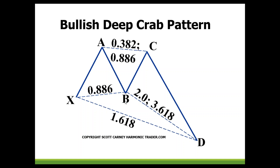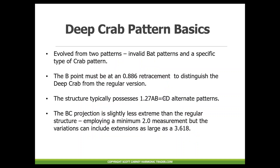The B point cannot exceed the X point, so it sits somewhere between 0.886 and 0.99 for the most part. That sets up our C point, which cannot exceed A — those are the basic M and W rules. Then it sets up a D point looking at that 1.618 with the other measurements. The deep crab evolved from invalid bat patterns, and we can look at the failure of a particular pattern at the 0.886 because that sets up the eventual completion of a 1.618 extension.